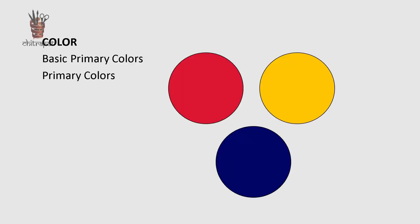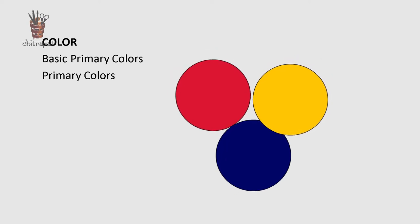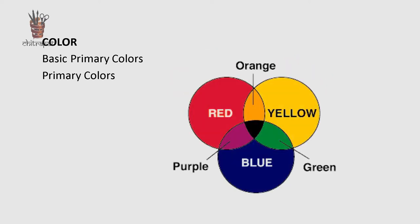As we all know, there are three basic colors called primary colors, which are red, yellow, and blue. Combining these three primary colors makes secondary colors — orange, purple, and green. Then the combination of these primary and secondary colors makes tertiary colors.